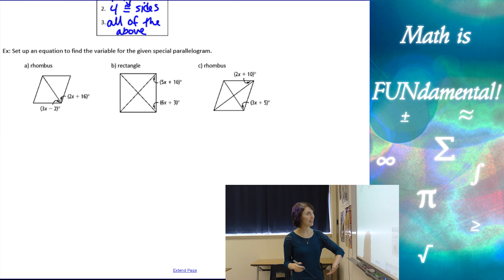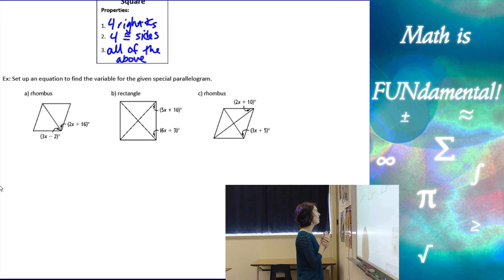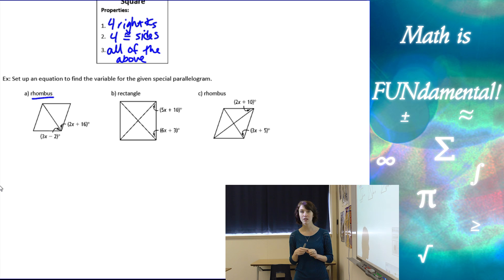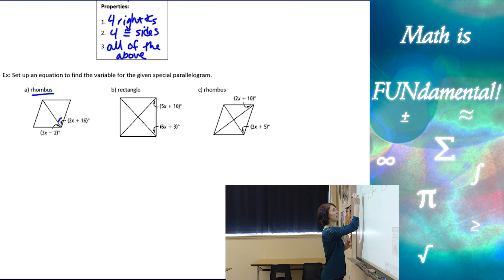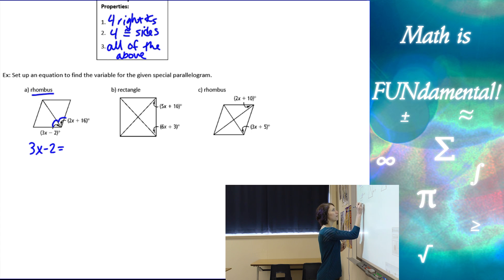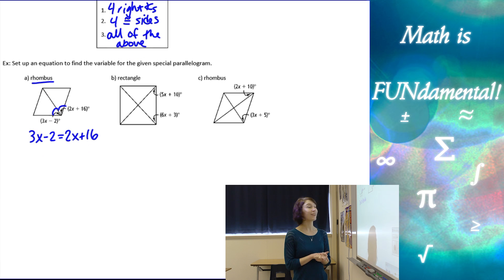Let's apply some of these properties by setting up equations. For example (a), we have a rhombus with information about two angles in a corner where a diagonal passes through. Going back to rhombus properties, the third property says diagonals bisect opposite angles. So those two angles are equal to each other because we know it's a rhombus.